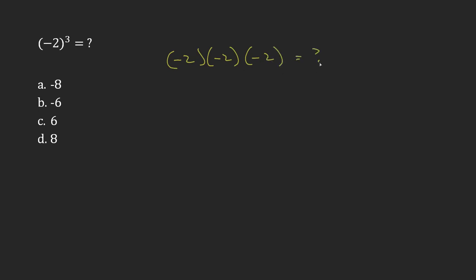So negative 2 times negative 2, if I were to just look at that part, I'm going to be multiplying a negative by a negative, and so negative times a negative becomes a positive. Negative 2 times negative 2, the 2 times 2 part gives me a 4. So this is a positive 4.